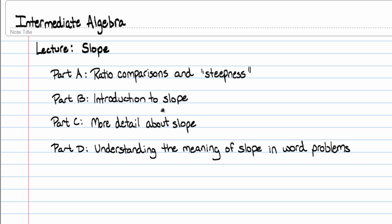Hello, my name is Roy Simpson. I'm a professor of mathematics at Cosumnes River College in Sacramento, California. This is Part C of a lecture on slope for linear equations. By the way, a little factoid for you: slope is only defined for linear equations.